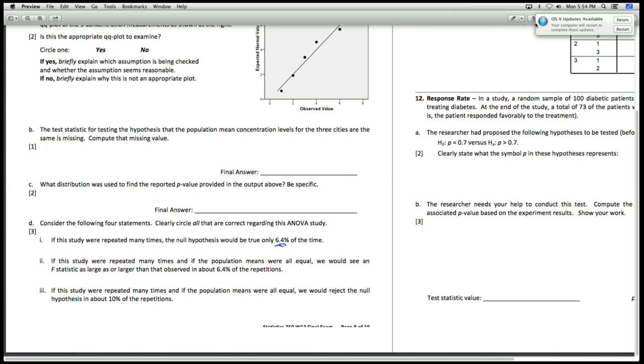Number two, if the study repeated many times, and if the population means were all equal, we would see an F as large or larger than that observed in about 6.4%. So this is just the definition of the p-value, 6.4%. So this is true.